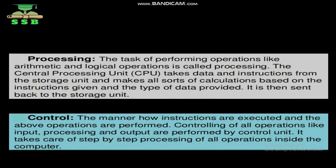The control unit takes instructions from the storage unit and performs all sorts of calculations based on the instructions given and the type of data provided. The arithmetic logic unit performs the operations while the control unit controls them. This overall operation happening in the CPU is called processing, and the control unit manages the manner in which instructions are executed — taking input and providing output. This controlling mechanism is called the control structure.